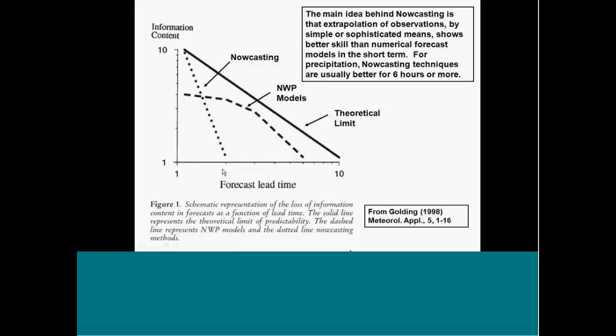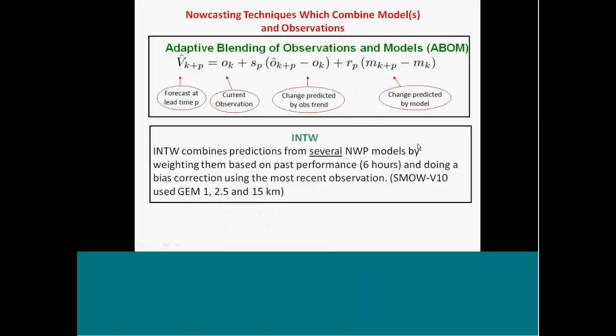Now I'm going to show you a bit of our results from our nowcasting and algorithms. And the main idea behind nowcasting is that extrapolation of observations by whatever means you use can produce a better skill than numerical forecast models in the short term. So basically, this is the nowcast. This is the NWP in terms of forecast lead time and information content. And at a certain crossover point, the nowcasting cannot beat the NWP models. I'm going to show you some results like that.